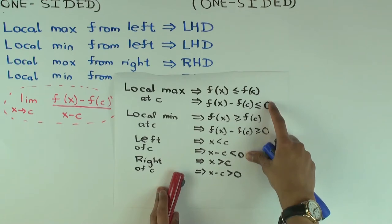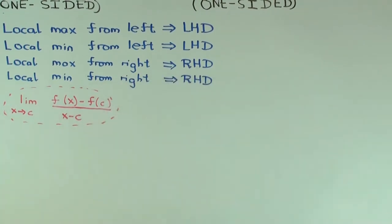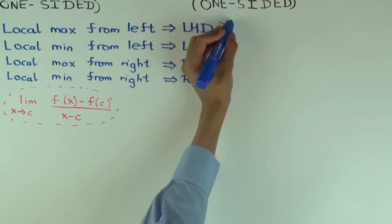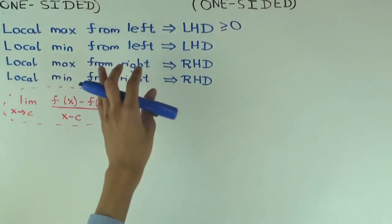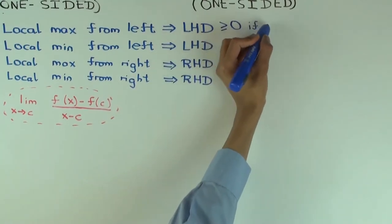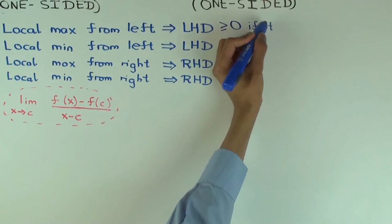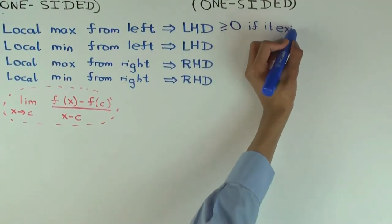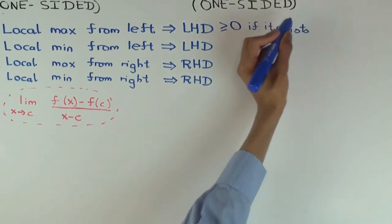Then you take the limit, and the limit of something greater than or equal to zero is also greater than or equal to zero. So the left-hand derivative is greater than or equal to zero — but you have to add: if it exists. The function need not be left-differentiable, but if it is, the left-hand derivative is greater than or equal to zero.